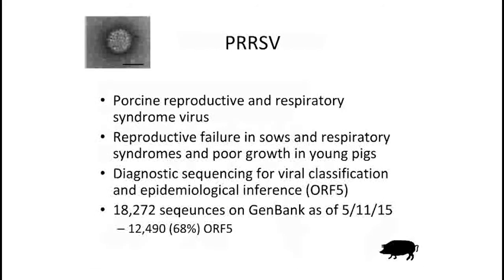I want to start out with a virus I've been studying for my entire career: PRRS virus. PRRS stands for porcine reproductive and respiratory syndrome virus. It's in the viral family Arteriviridae, so it's an arterivirus. There are no known human arteriviruses, but these viruses are distantly related to coronaviruses such as SARS or MERS. It causes reproductive failure in sows and respiratory syndromes and poor growth in young pigs — making it an economically important virus. Remarkably, PRRS is one of the few viruses in veterinary medicine where RNA sequencing is a standard diagnostic procedure.